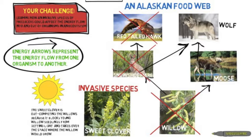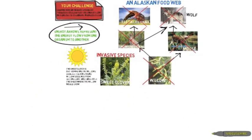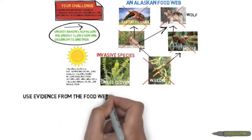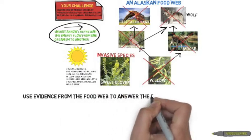The wolf also sees a decline in its population. Even though it is a carnivore and doesn't eat the willow, it has no food to eat either, so its population declines. One plant could affect many different organisms.